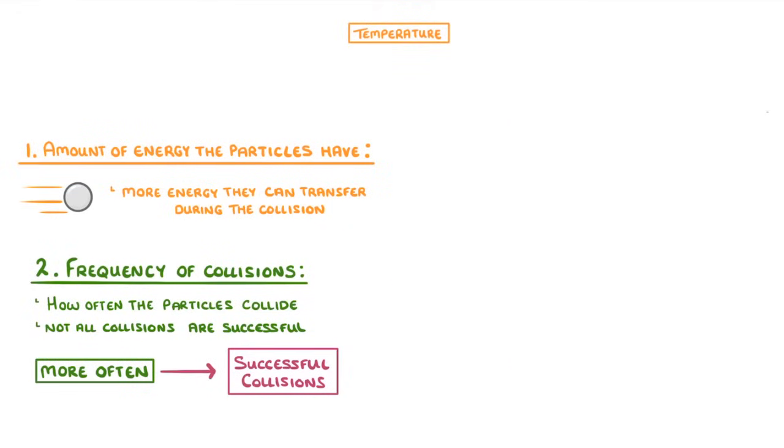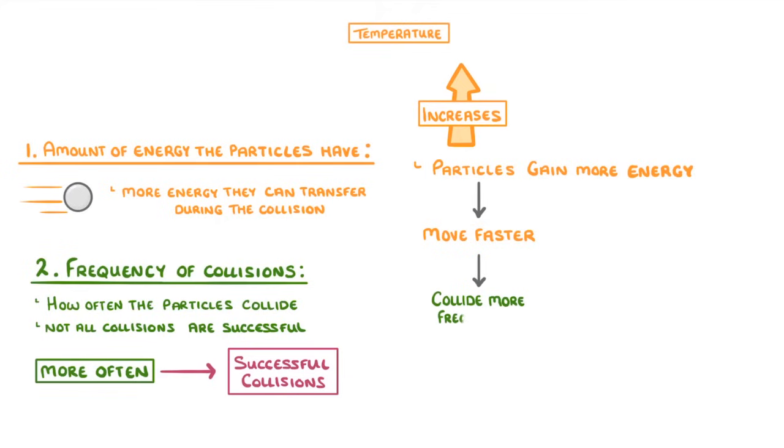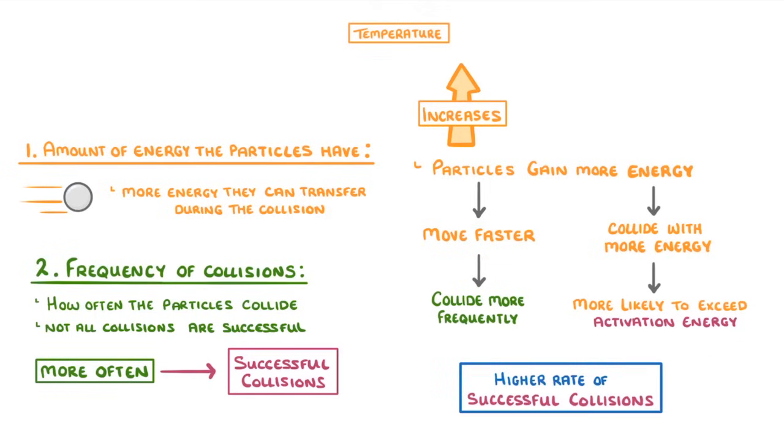Let's start with temperature. As the temperature of a reaction increases, the particles gain more energy, which means they move faster. And because they're moving faster, they'll collide more frequently. They'll also collide with more energy each time, so are more likely to exceed the activation energy. So overall, there will be a higher rate of successful collisions, and thus a higher rate of reaction.